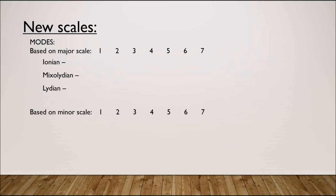There are three modes that can be thought of as variations of the major scale. Ionian has the same notes as a major scale. Mixolydian has the same notes but with a lowered seventh scale degree. And Lydian has a raised fourth scale degree.